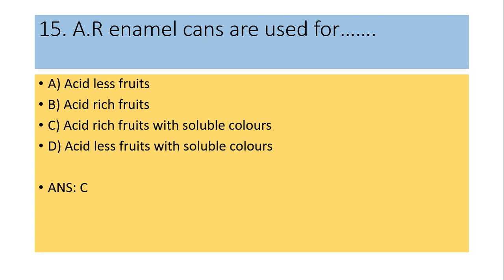Fifteenth question: AR enamel cans are used for — acidless fruits, acid-rich fruits, acid-rich fruits with soluble colors, or acid-rich fruits without soluble colors? Answer is C: acid-rich fruits with soluble colors.